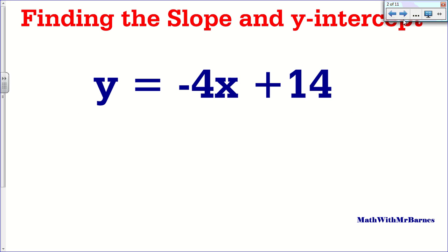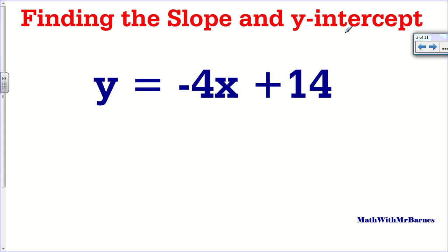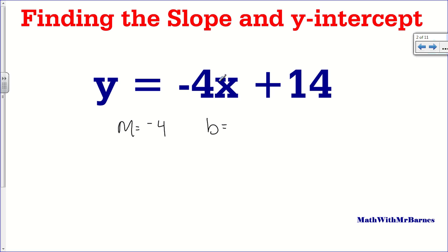Alright, so let's look at the first example — identifying the slope and the Y-intercept from Y equals MX plus B form. This is really fundamental. The slope, which we call M, is given in front of the variable — it's always in front of the X. So our slope in this particular example is negative 4. The Y-intercept is always the constant — basically what you get if you let X equal 0. So my Y-intercept B is 14.